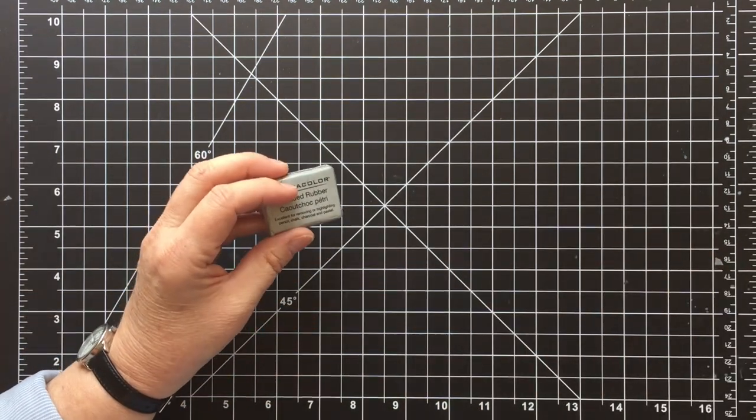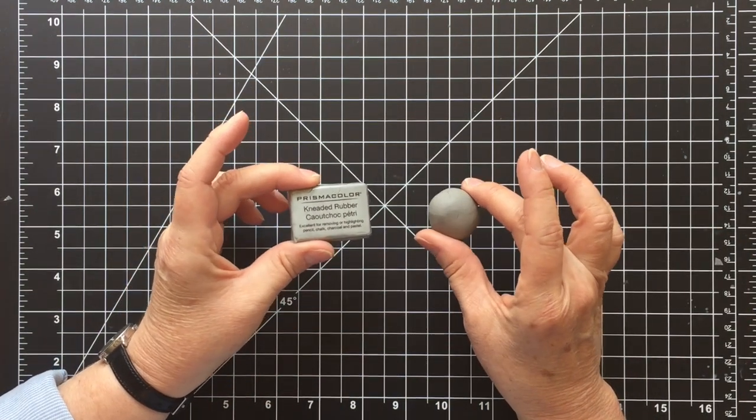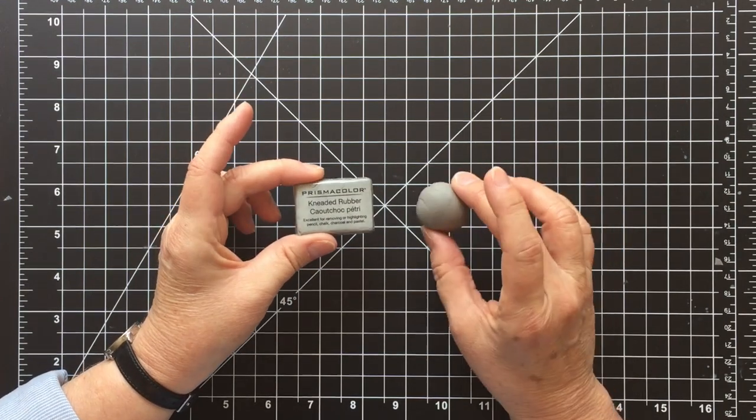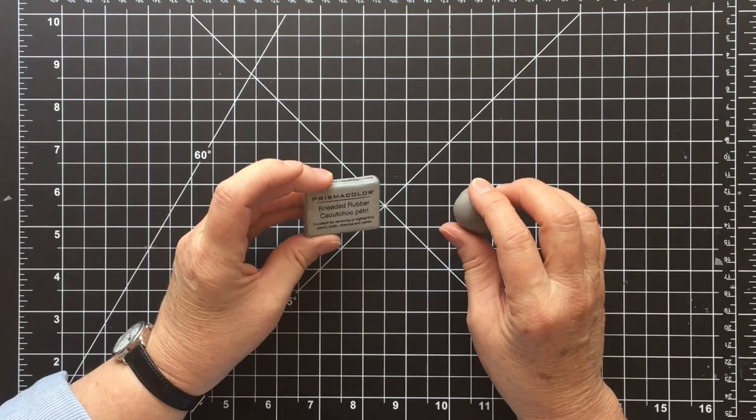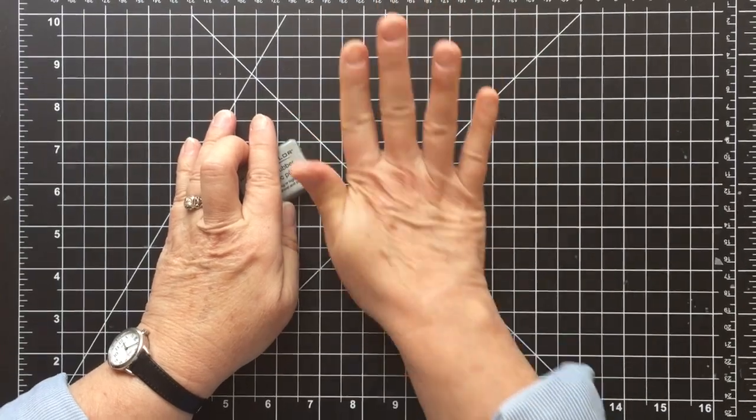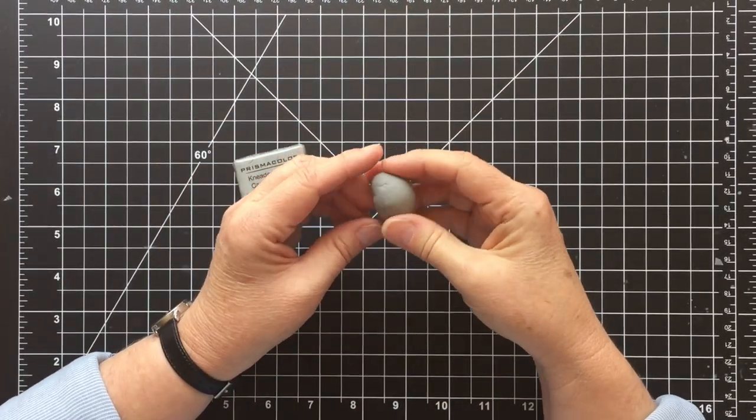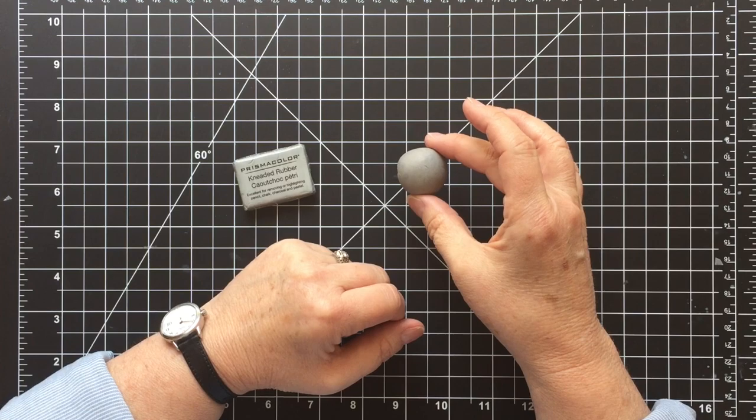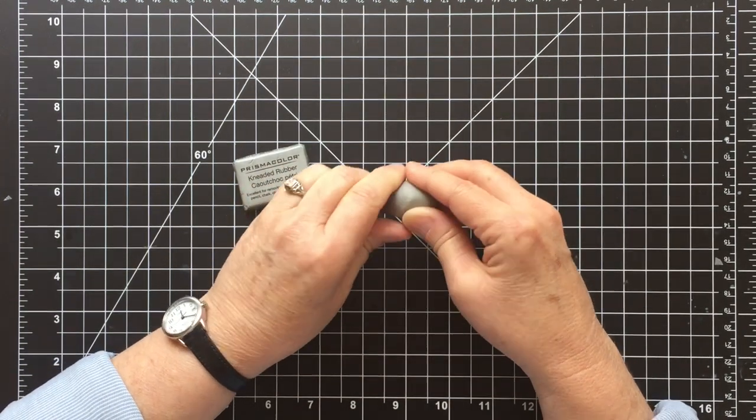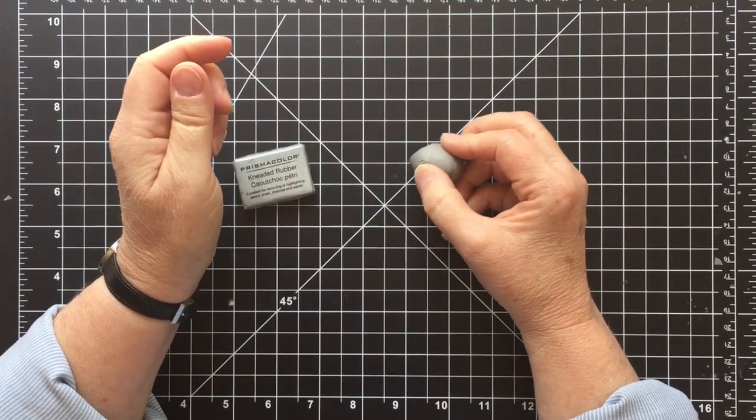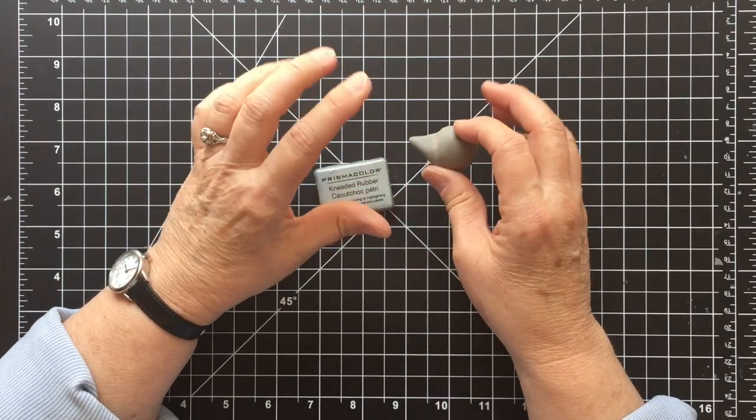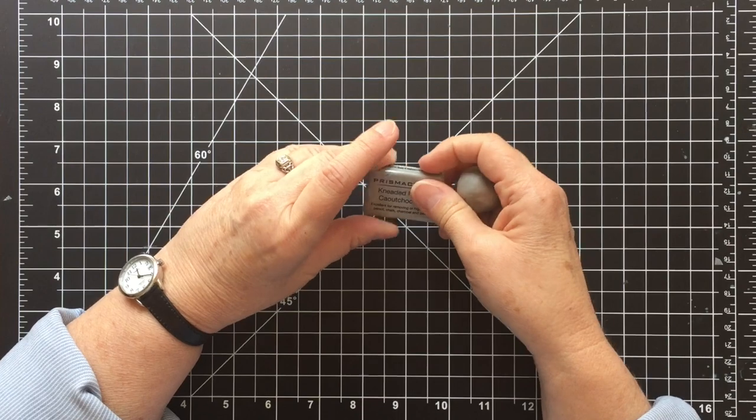Now, inevitably you'll find yourself in need of an eraser. This is a kneaded rubber eraser. This is a Prismacolor brand. There's other brands as well. They come in a little brick like this when they are new, and you take them out and roll them into a little ball like this, and they are great for erasing light lines and are wonderful for making a highlight. I like to pinch them into a little point like this, and you can kind of scrub on the color and take up some of the color to make it a little bit lighter.